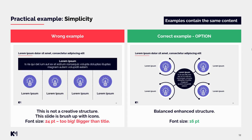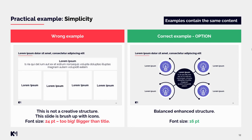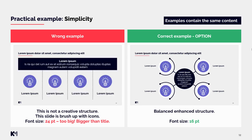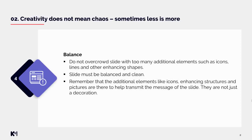We also see the other side of the coin. The wrong example here is the same input as before, but this option is not a creative structure — it is just brushed up with icons, and the font size is too big at 24 points, bigger than the title. You can see the original input was just boxes that were aligned, fill changed, and icons added. A creative structure would be something like what you see in the correct example. This brings us to balance.